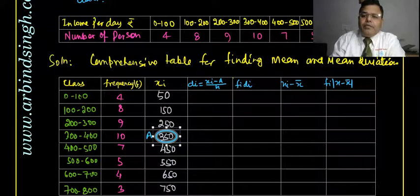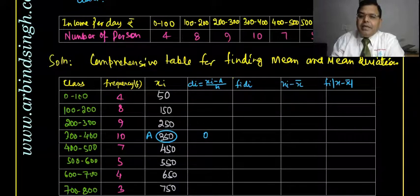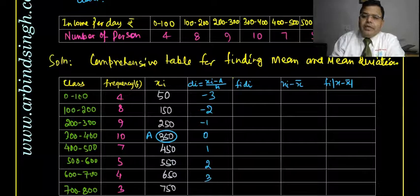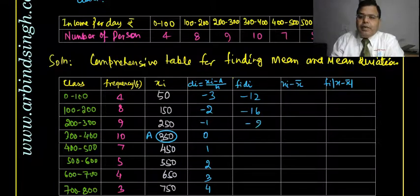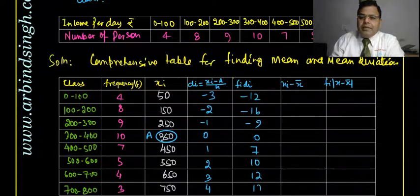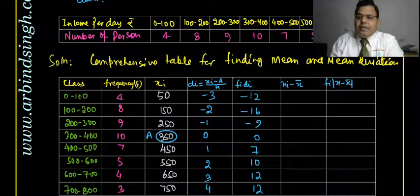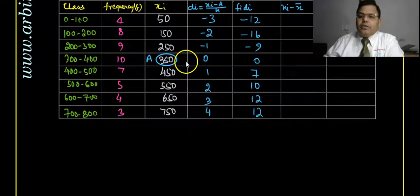With a = 350 and h = 100, di = (xi − 350)/100. The di values are: −3, −2, −1, 0, 1, 2, 3. Computing fi·di: 4×(−3)=−12, 8×(−2)=−16, 9×(−1)=−9, 10×0=0, 7×1=7, 5×2=10, 4×3=12, 3×3... The positives and negatives partially cancel, giving Σfi·di = +4.